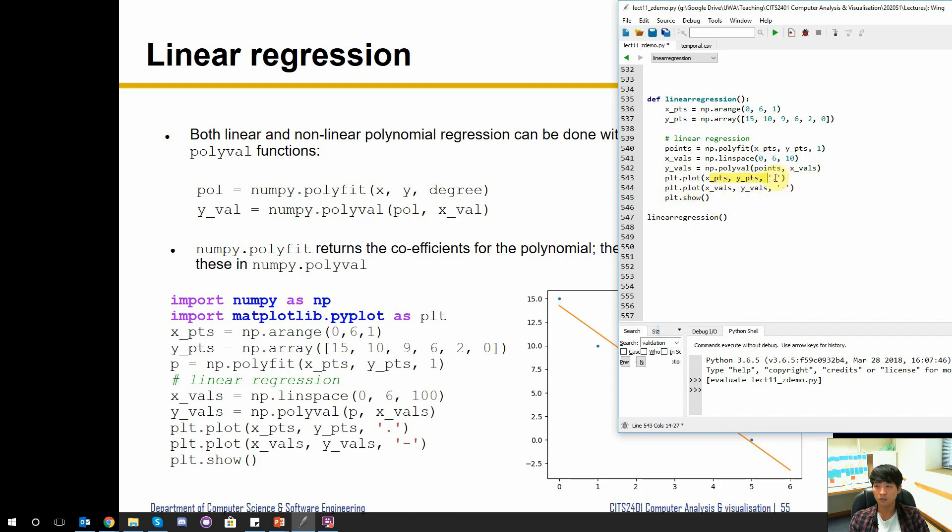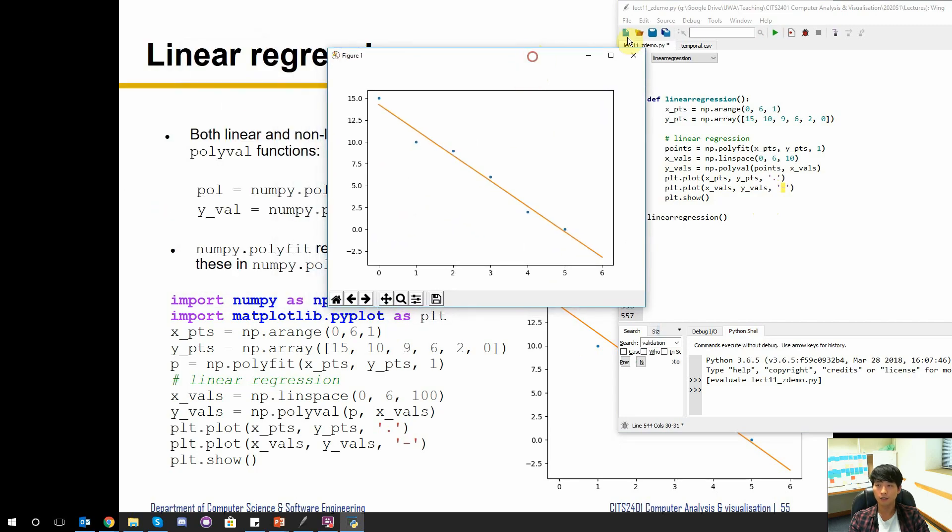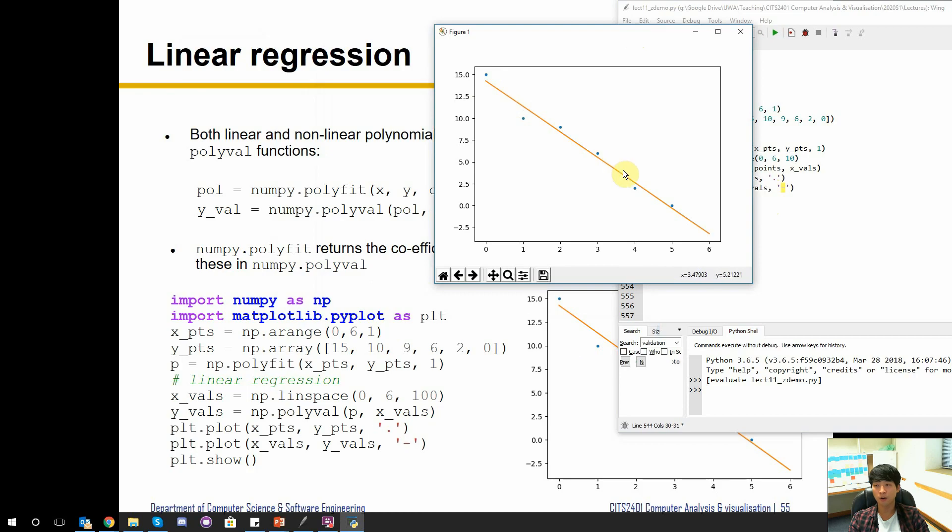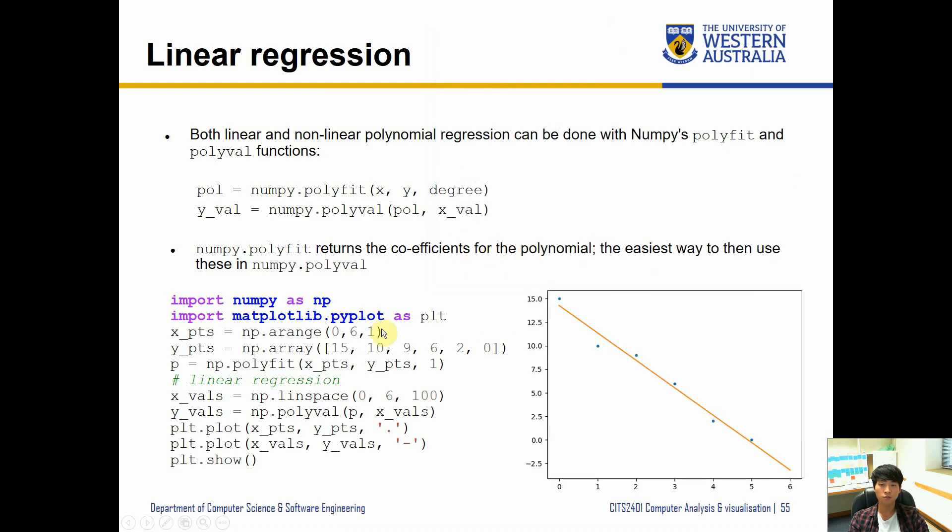So if we run that we should get the same graph as we see here, like this. So the blue dots are our original points and orange line is the line that minimizes the error between those points when they are measured against this orange line. Okay, so that's the linear regression. So as you can see, linear is a first degree polynomial so we just specify one here.